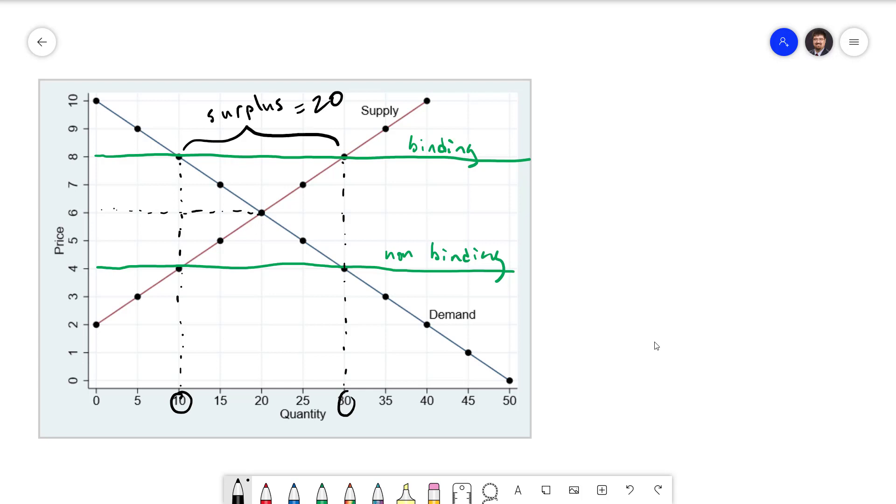With a binding price floor, we again have inefficiency because the price fails to ration the good properly. This time though, it's the demand side that has to do the rationing. There's now more suppliers than there are buyers and so the buyers can pick and choose who they buy from. This can again result in some discrimination.